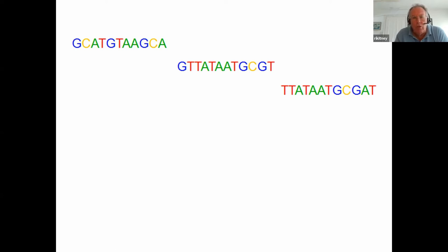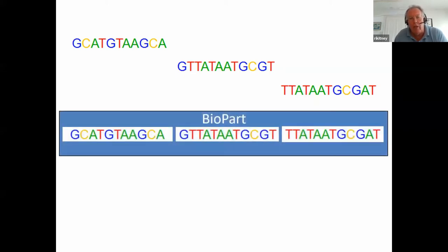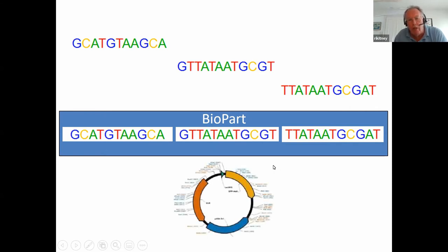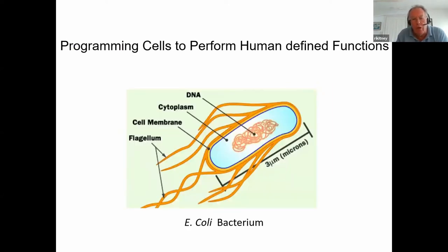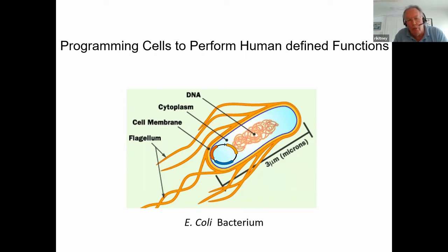In synthetic biology, what we do is take the bases and combine them together in what are called bioparts. We can do this because it is now possible to chemically synthesize these bioparts in any combination we like. We then put these into a plasmid, and the plasmid is inserted into a cell — here I've shown an example of E. coli bacterium. We insert the plasmid containing the human-designed DNA into the cell, and that acts as a secondary instruction set to tell the cell to produce products of human design.